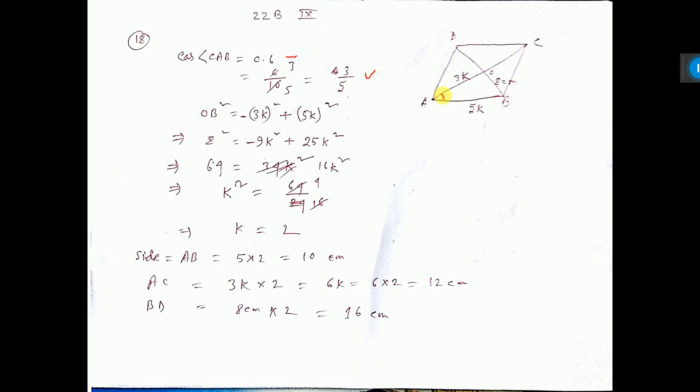Now for this angle, we have to find one right angle triangle. This is rhombus, so diagonals intersect at 90 degrees. So consider AOB triangle, this is a 90 degree triangle.